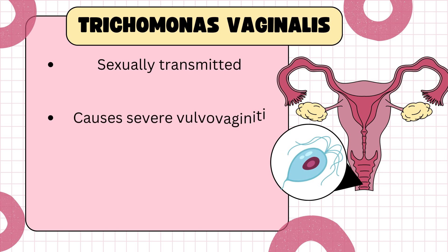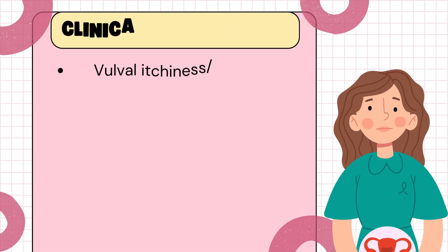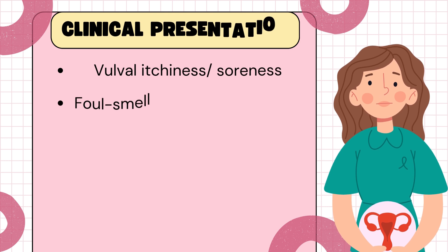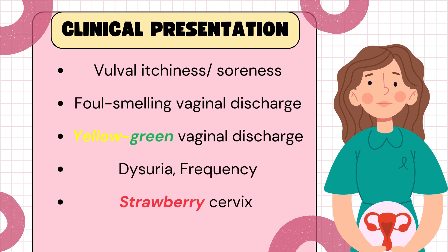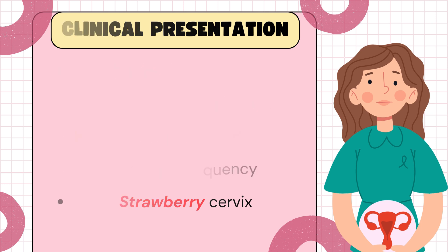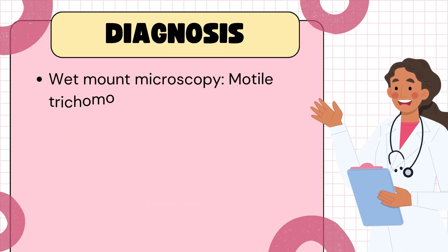Finally, our last topic for the day is trichomoniasis. Trichomoniasis is a sexually transmitted infection caused by a protozoan called Trichomonas vaginalis. These patients will present with frothy yellow-green discharge with a foul odor, vaginal and vulval itching and irritation, and a strawberry cervix upon examination.